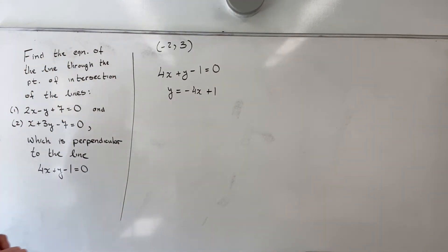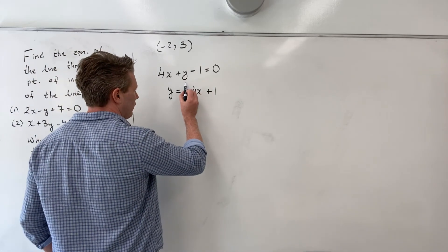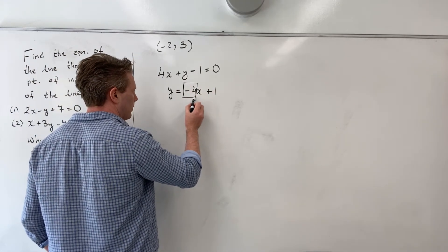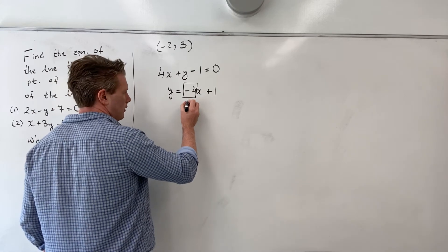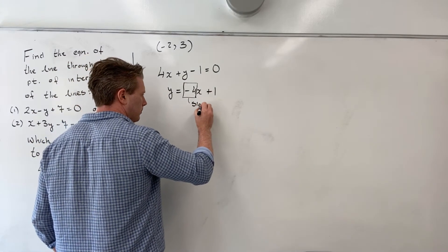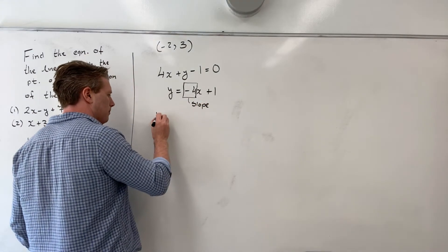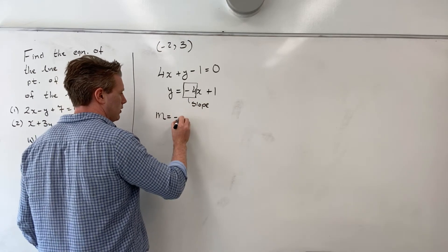And so I see that my slope therefore is right here. It is the coefficient on my x term, and that's my slope. And so this here is my slope. And so I have that m, if you like, is minus 4.